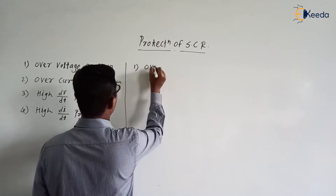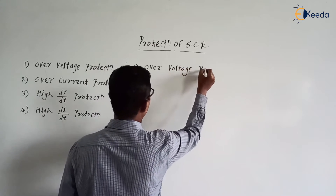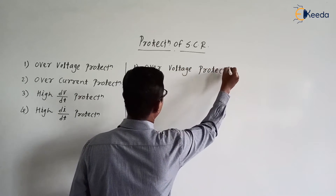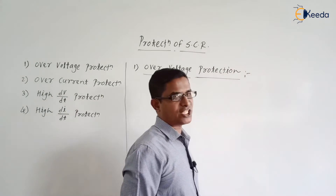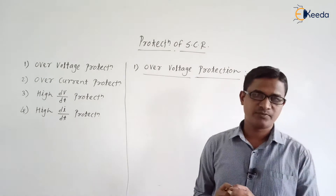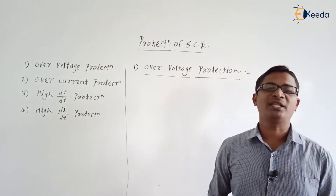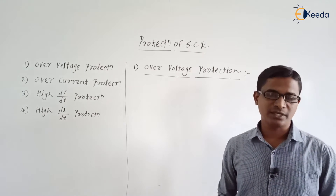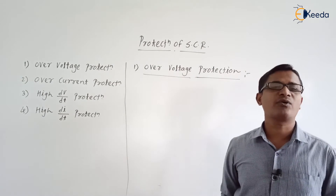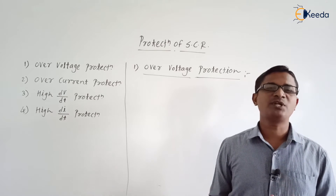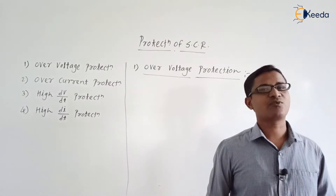So, why is over voltage protection required in the SCR? Due to over voltage, if you recall the triggering methods, the very first method is forward voltage triggering. In forward voltage triggering, we apply a high forward voltage across the SCR. Due to that, the breakdown of the depletion layer across junction J2 takes place. So, over voltage protection is required.